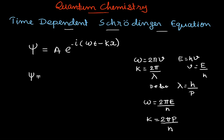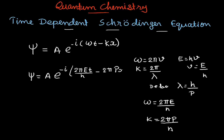Substituting, we have: psi = A e raised to minus iota times (2πEt/h minus 2πpx/h). We can take 2π/h common from both terms.